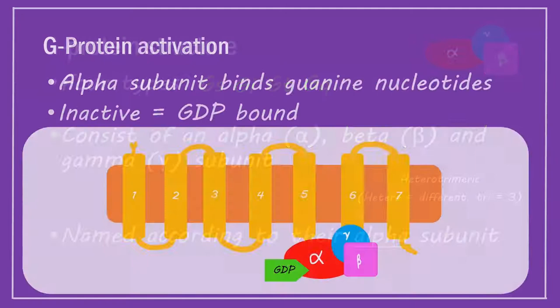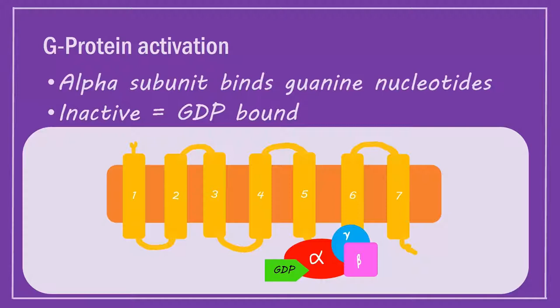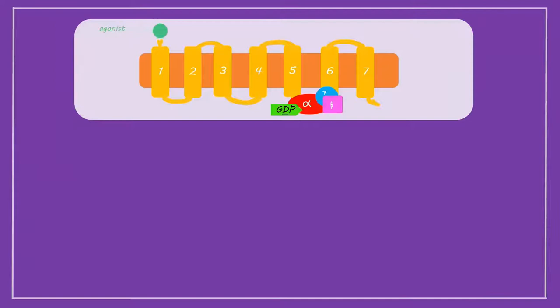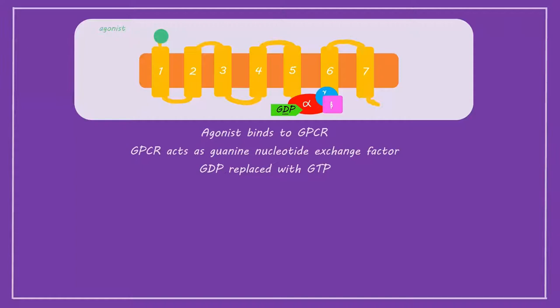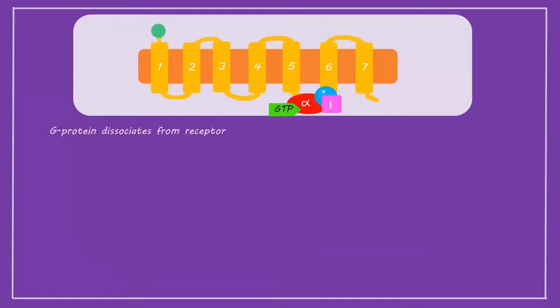G-protein activation. The alpha subunit of the G-protein binds guanine nucleotides. In the inactive state, GDP is bound to the alpha subunit. However, when an agonist binds the GPCR, the receptor acts as an upstream guanine nucleotide exchange factor and GDP is replaced by GTP.